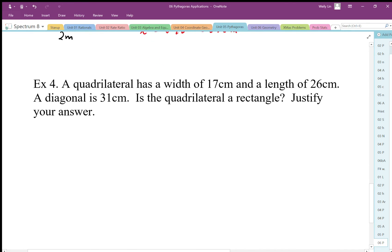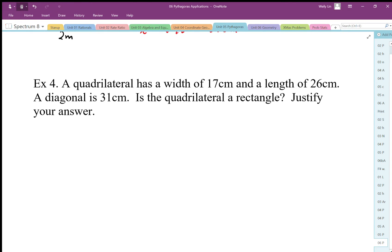Okay, so the last one here we've got a quadrilateral, so it's a four-sided object, and we know it has a width of 17 and a length of 26. So this is our quadrilateral and the diagonal for this quadrilateral is 31 centimeters.